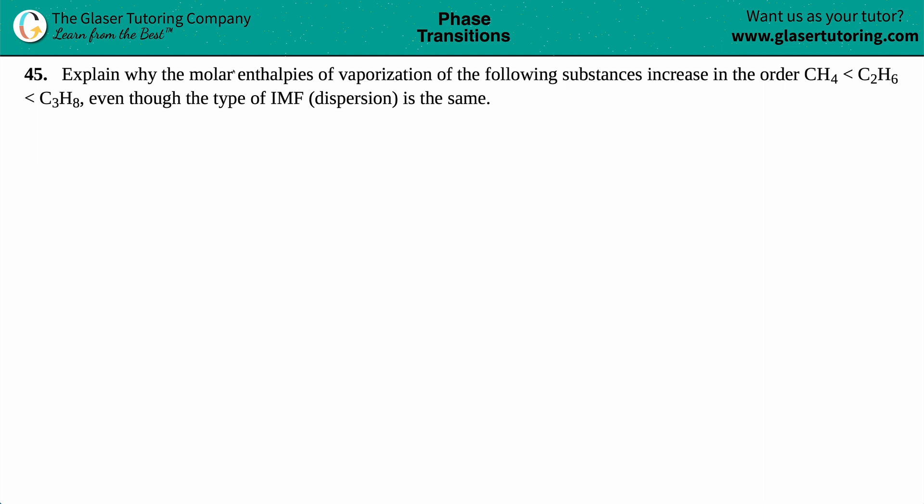Number 45, explain why the molar enthalpies of vaporization of the following substances increase in this order. So we have methane, which is CH4, has the least molar enthalpy of vaporization, then comes C2H6, and then comes C3H8. And then they say, even though the type of IMF, which is intermolecular force, dispersion is the same.